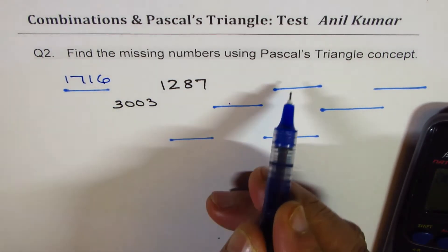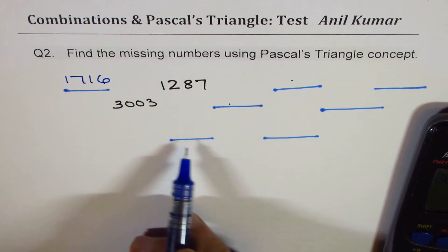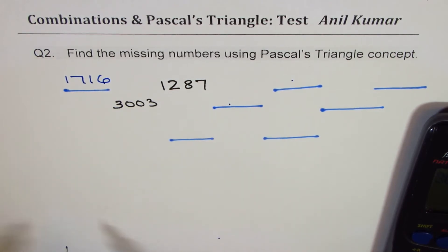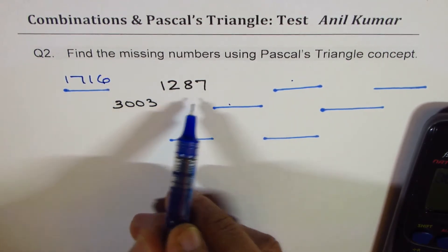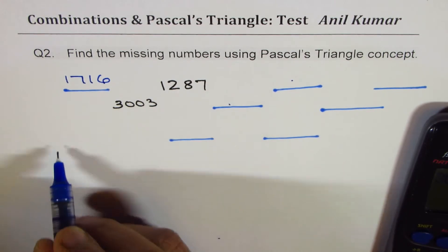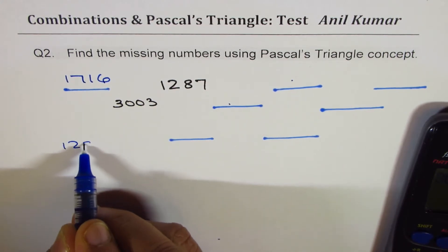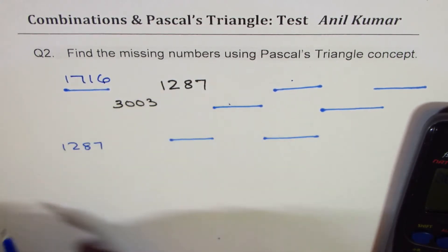Now how do I get this number or that number? How should I move forward? That is a very tricky part. Now in this particular case what you can explore is that the numbers given to us, 1287 for example, let's try to figure out their factors.